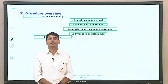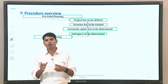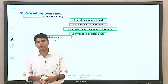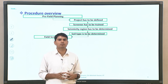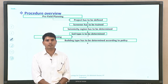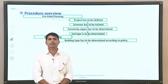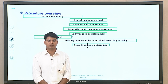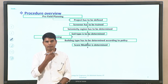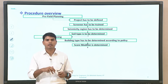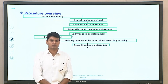Once you know the site location, have trained the screener, know the seismic zone, the type of building being targeted, and the site condition, you start field screening. Building type has to be determined based on the construction material used. Depending on the building type, you determine the base score and then the score modifier, which helps understand how the base score has to be modified accounting for irregularities, number of stories, and other characteristics.